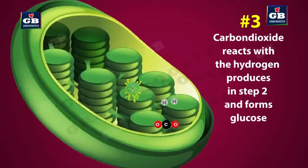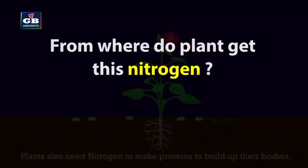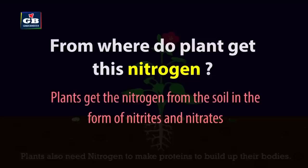Step 3: The hydrogen produced in step 2 reacts with carbon dioxide and forms glucose. Apart from glucose, plants also make proteins in their bodies. Plants need nitrogen to make protein molecules.